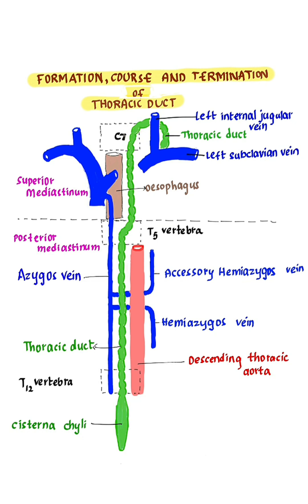In the neck, at the level of C7 vertebra, it arches laterally. Finally, it descends in front of the first part of the left subclavian artery and ends by opening into the junction between the left subclavian vein and the left internal jugular vein.